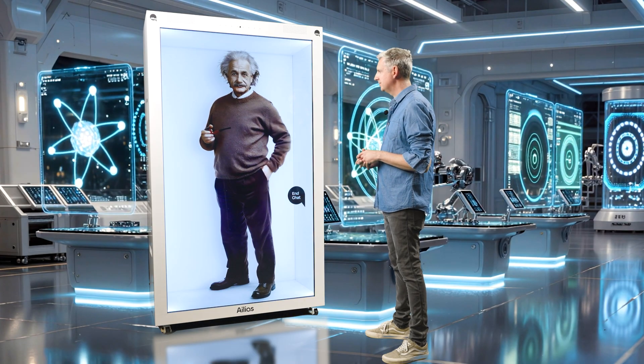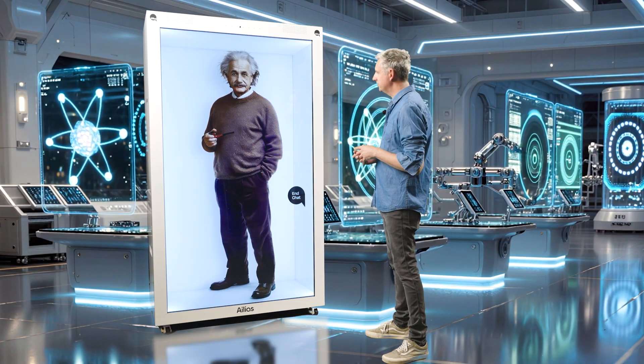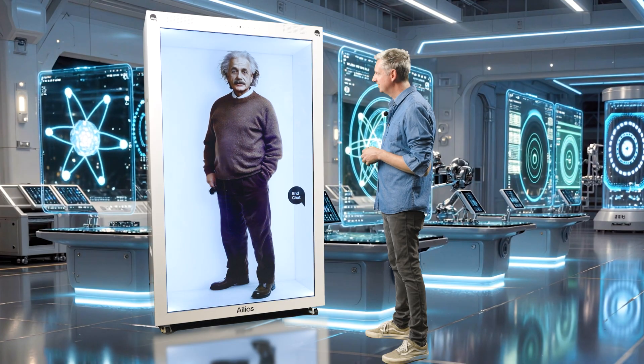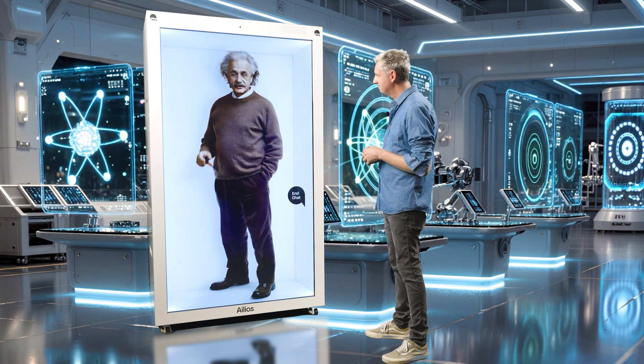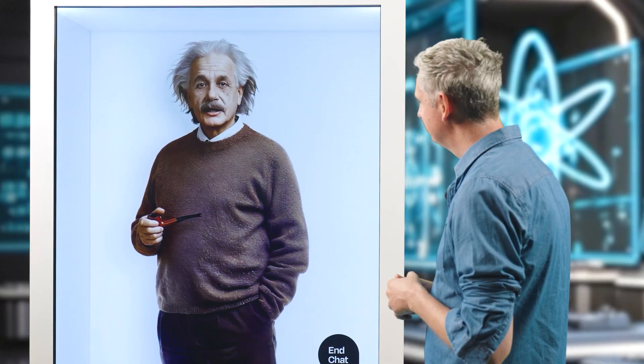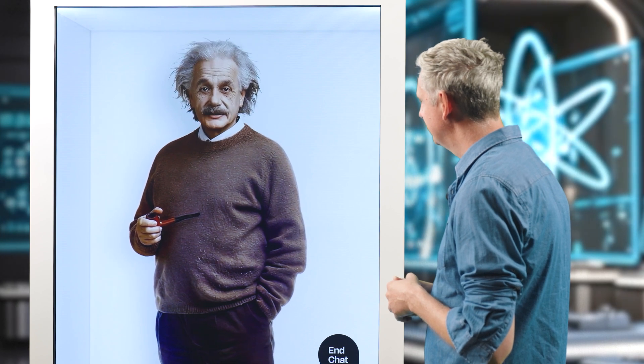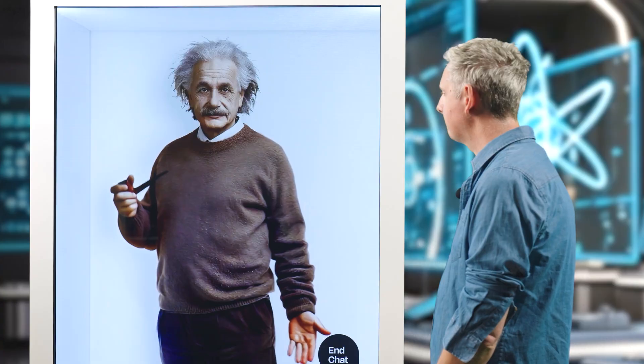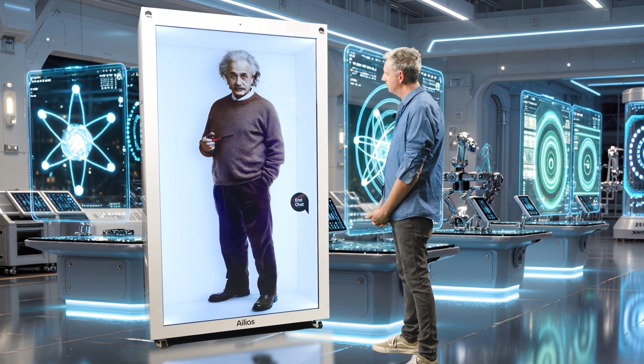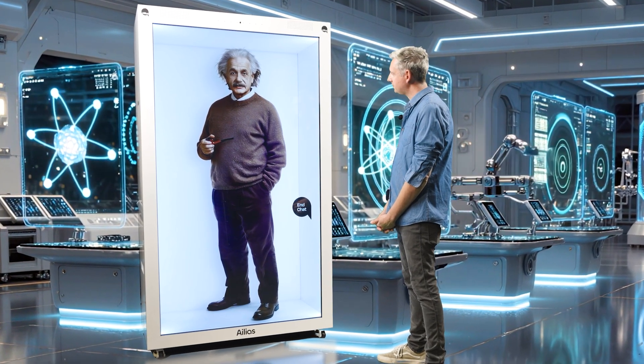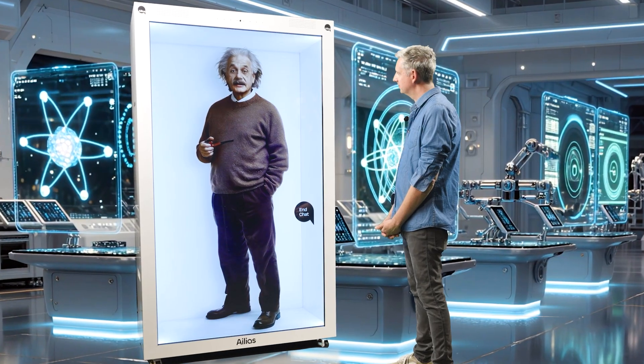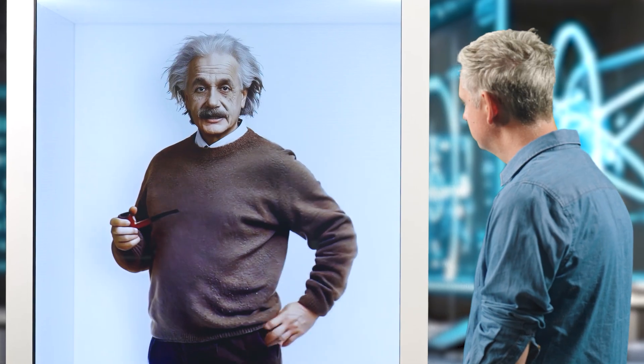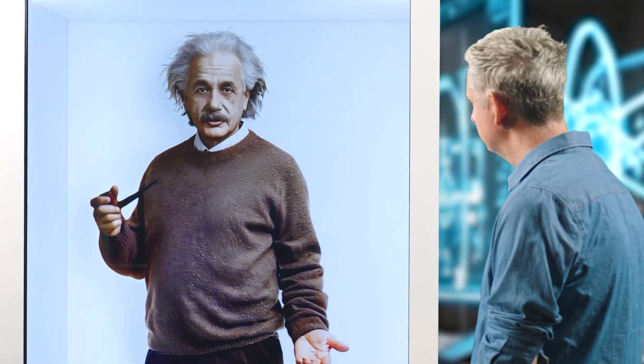Could you settle a debate for us? Is it technically accurate to say that cats observe quantum states? The famous Schrödinger's cat thought experiment? It's a clever analogy. Technically, cats don't observe quantum states, but the idea illustrates how quantum superposition works. Until measured, a particle can exist in multiple states, like the cat being both alive and dead. It's about understanding observation in quantum mechanics. Quite a fascinating topic, isn't it? What's your take on it?